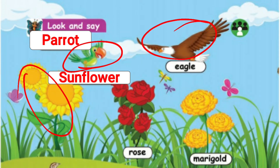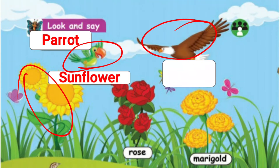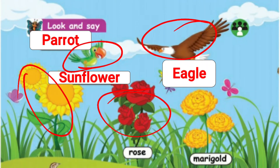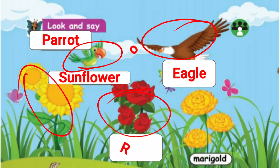What is this? This is an eagle. E-A-G-L-E. Eagle. And what is this? This is a rose. R-O-S-E. Rose.